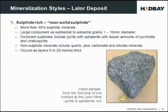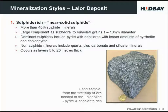Starting with the sulphide-rich or near-solid sulphide: it's more than 40-50% sulphide mineral, with a large component of euhedral or subhedral grains one to ten millimetres in diameter. In the photograph you can see pyrite faces as the light colour — one or two millimetres across. The dominant sulphides are pyrite and sphalerite, with lesser amounts of pyrrhotite and chalcopyrite, plus associated quartz, carbonate, and silicate minerals. These occur in layers five to twenty metres thick.